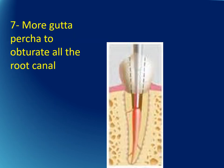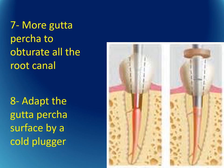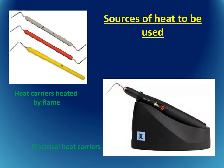More gutta-percha is placed in the root canal followed by additional plugging, then the gutta-percha surface is adapted using a cold plugger. The sources of heat for this technique may be a heat carrier heated by a flame or any heat source, or an electrical heat carrier.